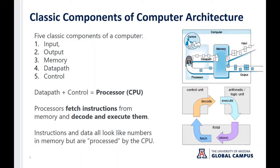There's the data path, which is the processor's interface with data stored in memory. And the control path, which is the processor's interface with the other operations of the computer that make it compute once it fetches data and instructions from memory. So essentially, the data path plus control make up the processor or the CPU.